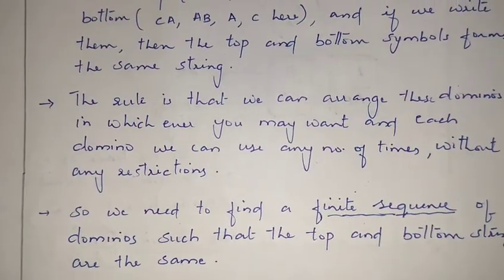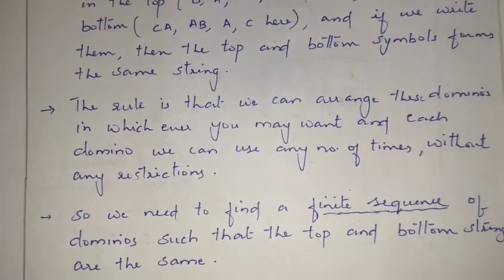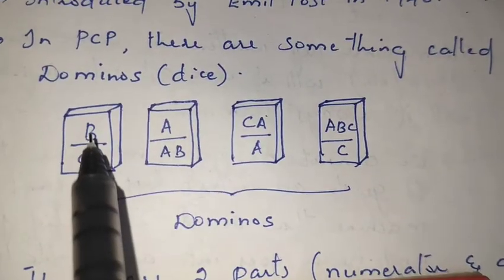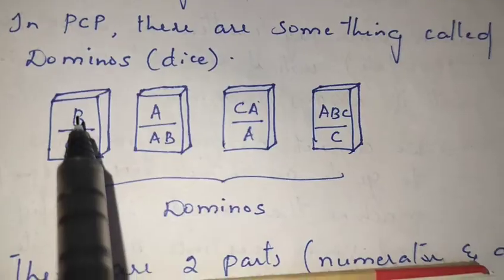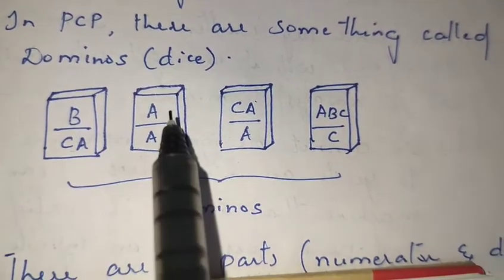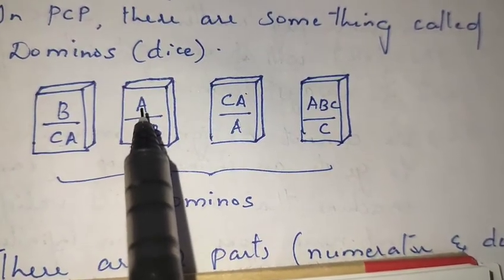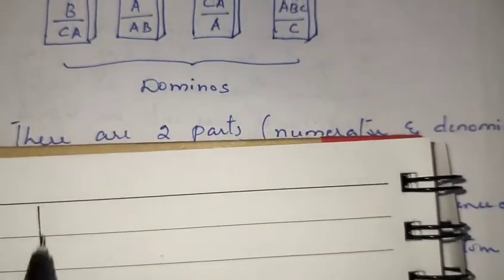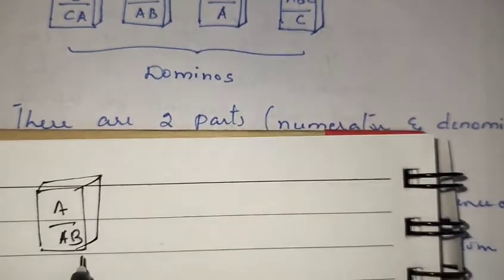So we need to find a finite sequence of dominoes where the top string equals the bottom string. The first step is that the first symbol in the numerator and denominator should be the same. Checking the dominoes: 'b/c' — not equal; 'a/a' — equal here, but others differ. So I take the domino 'a/ab'.